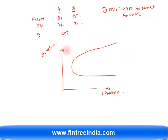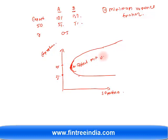The minimum variance frontier is constructed by defining a target return — say 7% — and finding the portfolio that gives the lowest possible risk for that return level, then repeating for other return levels. This is step one. The tip of the bullet-shaped curve is called the global minimum variance portfolio — that is step two.